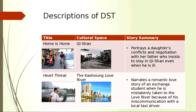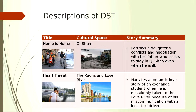The first group's digital story is titled 'Home is Home,' situated in Qishan, a place dramatically damaged by Typhoon Morakot. The story portrays a daughter's conflict and negotiation with her father, who insists on staying in Qishan even when he is ill, under very bad environmental conditions. The second group's digital story is called 'Heart Threat,' and it's about Kaohsiung Love River — a romantic love story of an exchange student who is mistakenly taken to the Love River due to miscommunication with a local taxi driver.